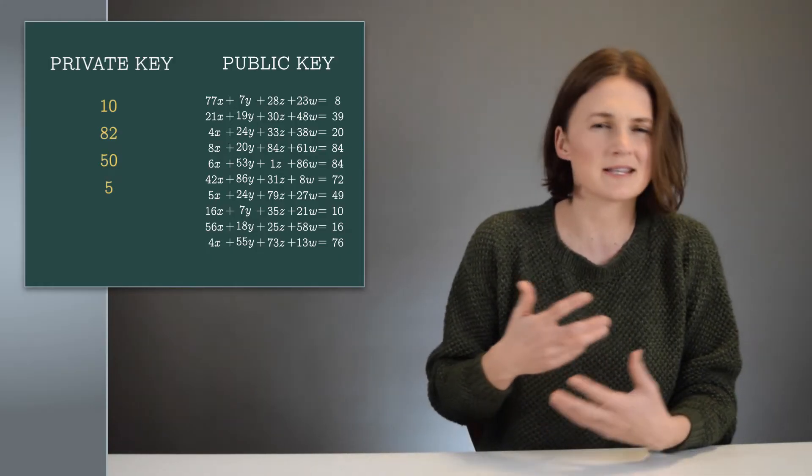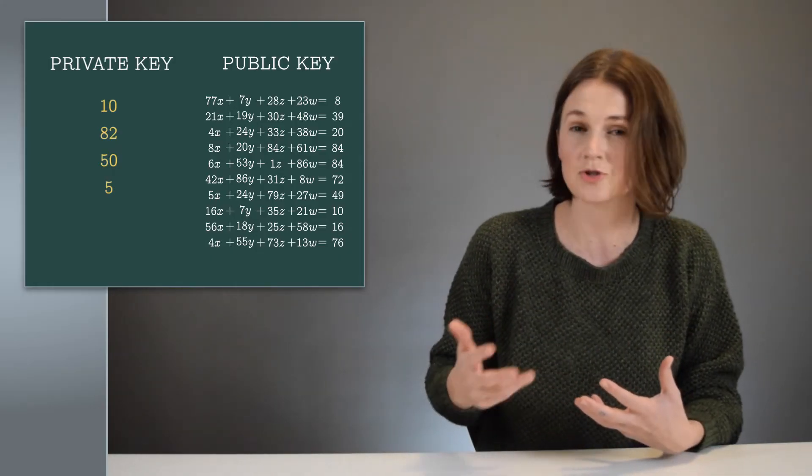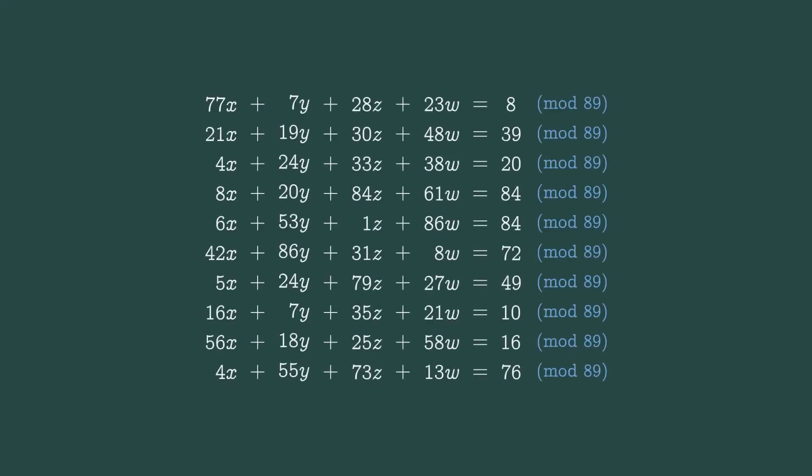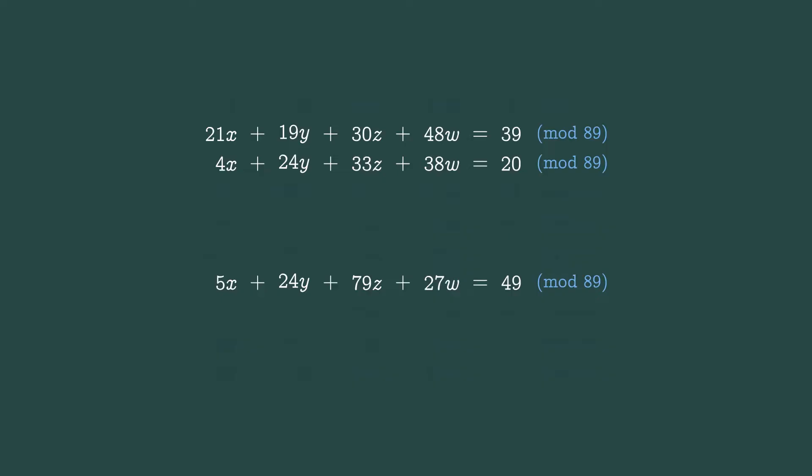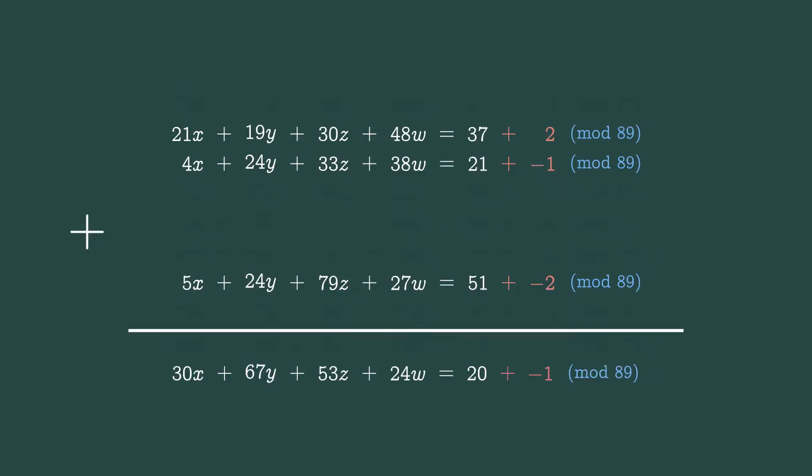Let's try to send the simplest type of encrypted message, just one bit, either a zero or one. First, Bob grabs a bunch of these equations, the public information. I'm going to write them out, separating the errors from the original equations. Now he adds them to create one new equation.